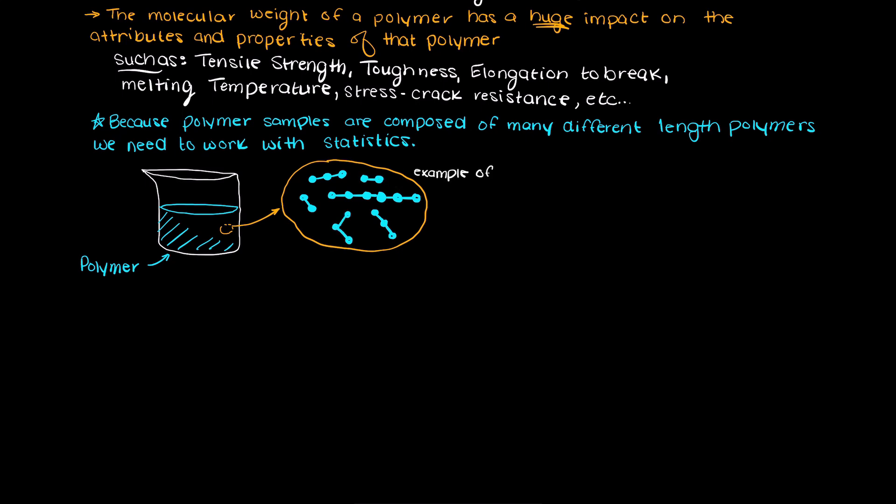So, imagine you have this beaker full of a polymer, and you want to identify the molecular weight of the unknown species. So we classify the molecular weight of polymers as either a number average molecular weight or a weight average molecular weight.